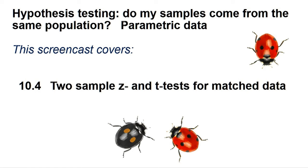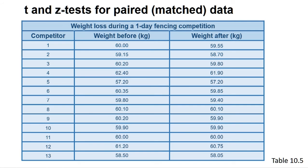Often in the biosciences we measure an aspect of the same individual organism or objects before and after the application of a treatment, with the purpose of understanding whether that treatment causes a change in the measured attribute. For instance, in the example detailed in section 10.4 of the book, we look at the weight loss due to competing in a one-day fencing competition by measuring the weight of the individuals before and after competing. Such data is called matched or paired data and is useful since it minimises the number of confounding variables that would be present if we measured a different set of individuals before and after the competition.